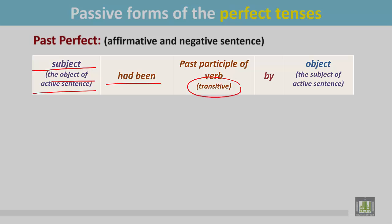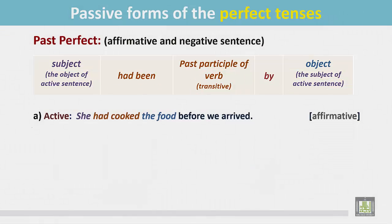Then the transitive verb in the past participle form, followed by the preposition 'by,' and the object — which is the subject of the active sentence in the passive form. See the examples.